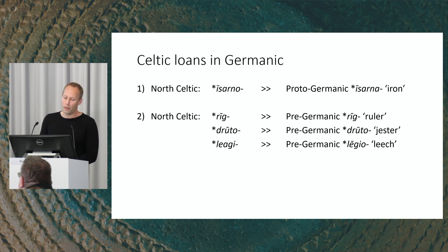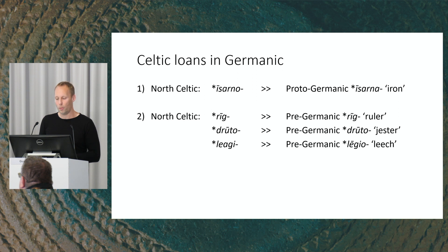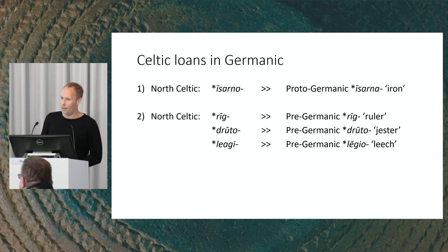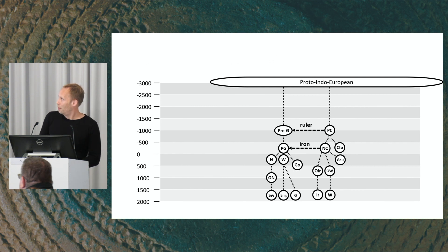There's also an earlier layer of Celtic loans having to do with social practices — you get words for a ruler, a jester, a leech. It has a very petty-kingdom feel: some kind of very small court where there was a not-very-important king who at least had a jester and a leech — a doctor — and the Germanic speakers adopted these from an early form of Celtic somewhere around 1000 BC.